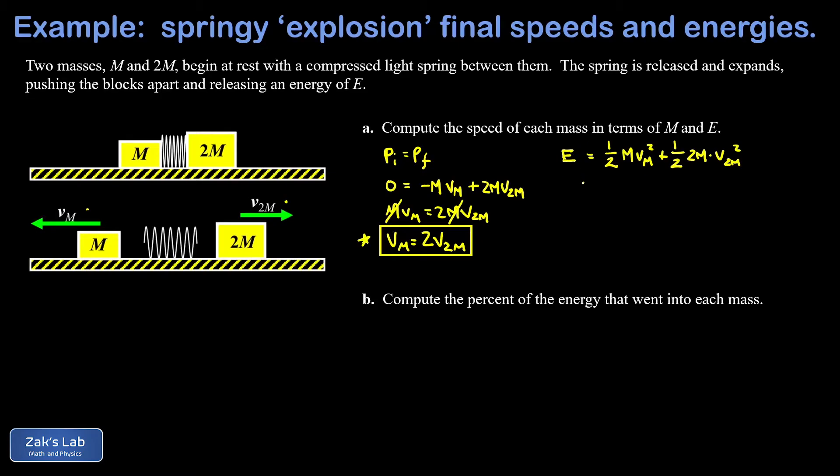And this is a good thing because now we have only that single unknown left in the equation and we're confident that we can solve for v2m. So we start cleaning things up. Here's a one-half canceling a 2. When I square 2v2m I end up with a 4 in that term.